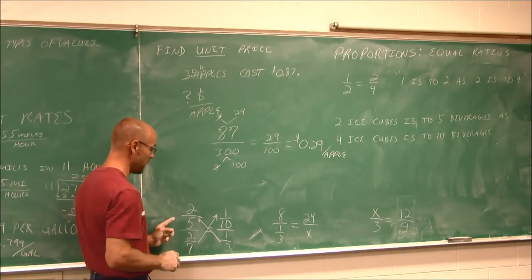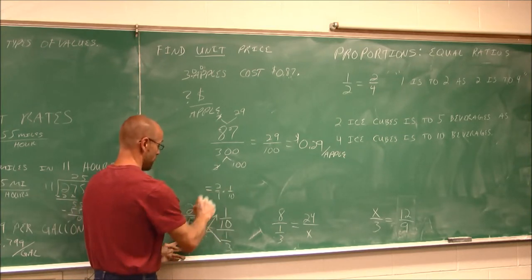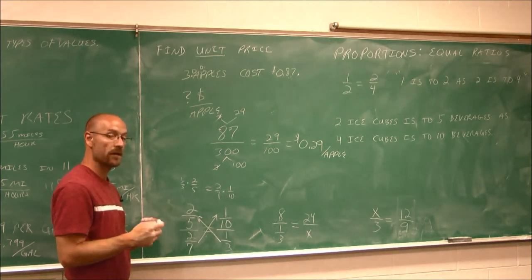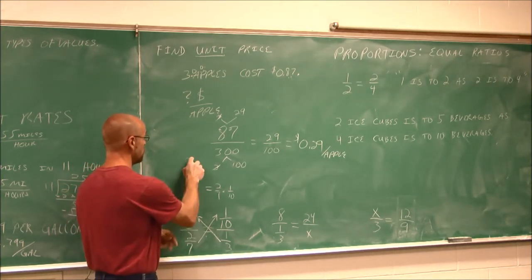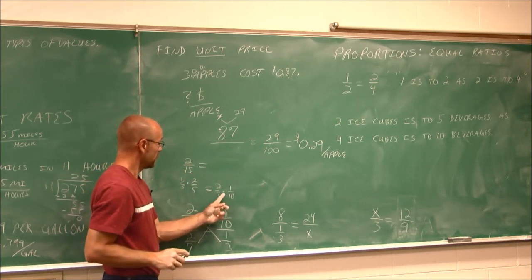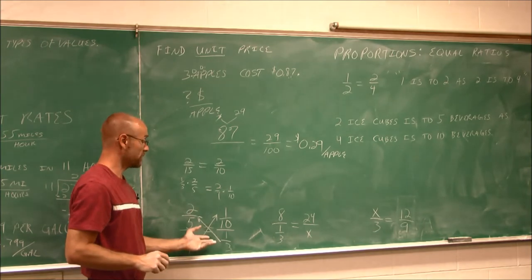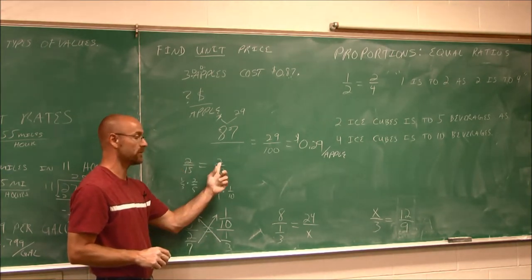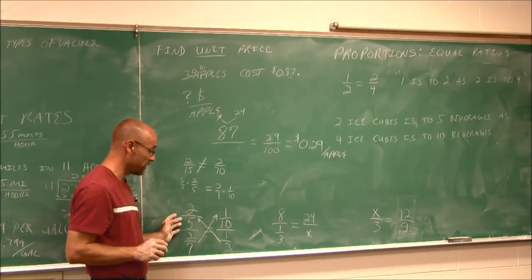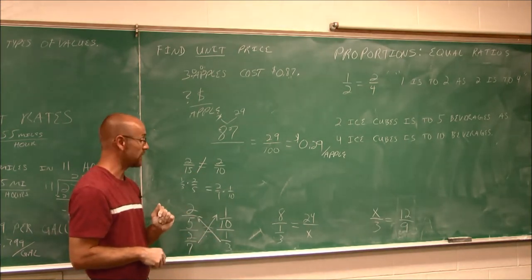So let me just write these out. I'm taking 2/7 times 1/10, and I'm taking 1/3 times 2/5, and now I'm just going to multiply them out and see if they're true. 1 times 2 is 2. 3 times 5 is 15. And let me get this out of the way here. 2 times 1 is 2. 7 times 10 is 70. In this example, using the cross product, 2/15 is not the same as 2/70. This is not a true proportion.